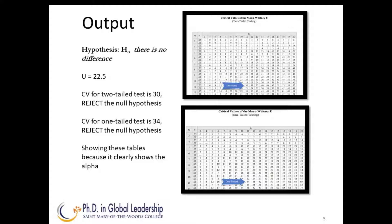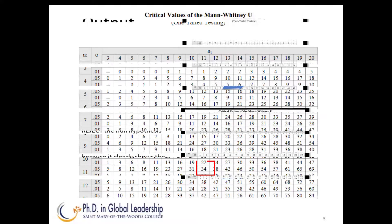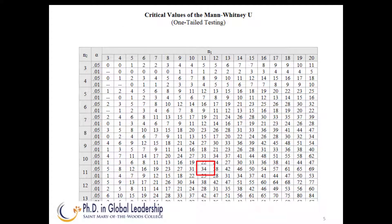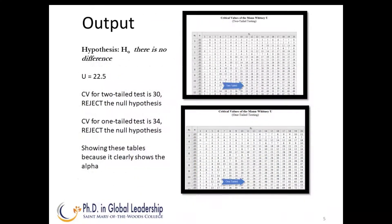So it's significant and we would reject the null hypothesis. If this were a one-tailed test, we would compare the calculated U of 22.5 to the critical value one-tailed test of 34 at 11 and 11. Again, since the calculated U is less than the table value, we reject the null hypothesis. Essentially, the training methods produce different results.